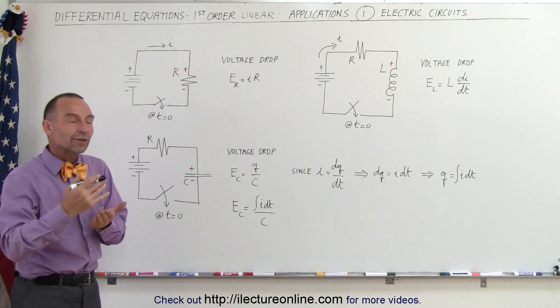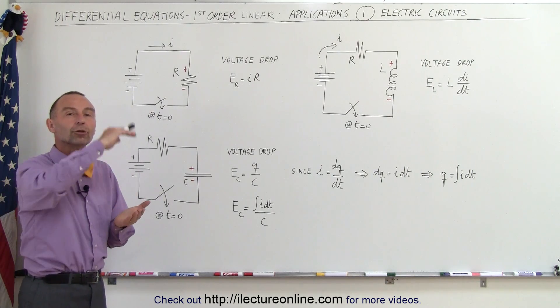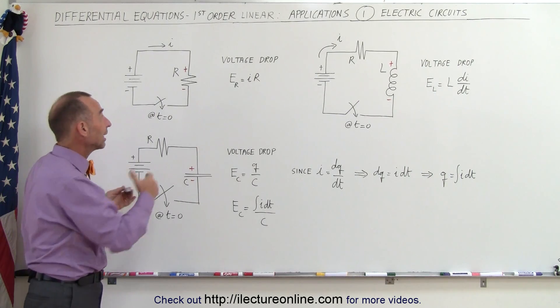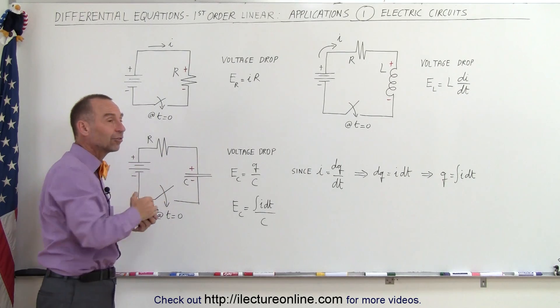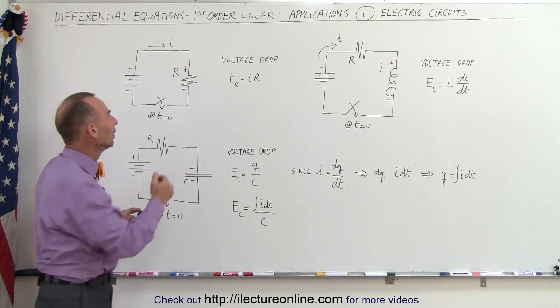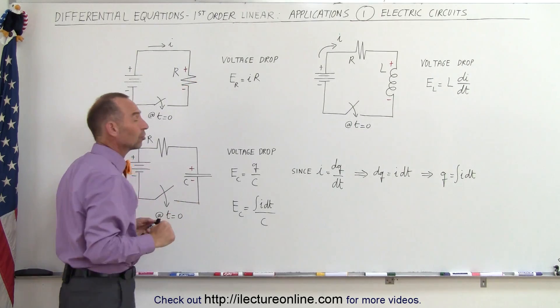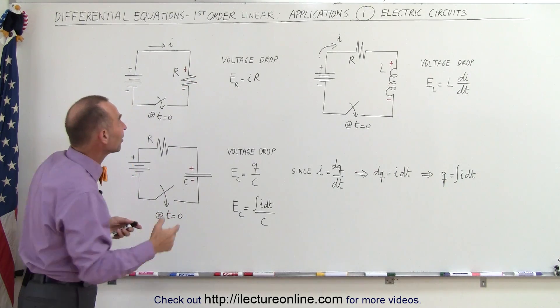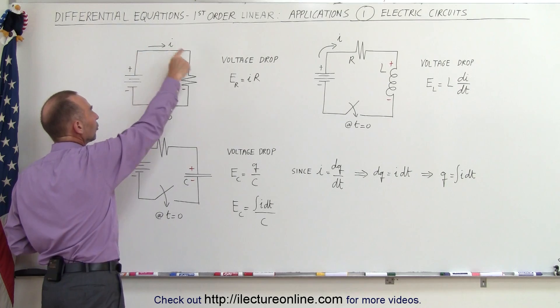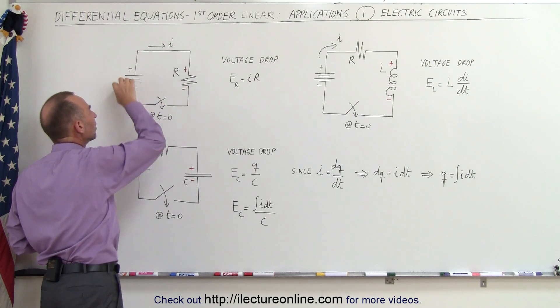What we're going to do in future examples is sum up all the voltages around the circuit. So when we get to the resistor, the inductor, and the capacitor, there'll be a voltage drop from the positive side to the negative side. Notice that in these examples, we're going to assume that the current flows through the circuit from the positive to the negative side.